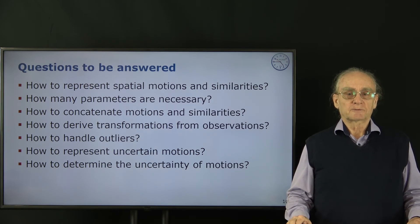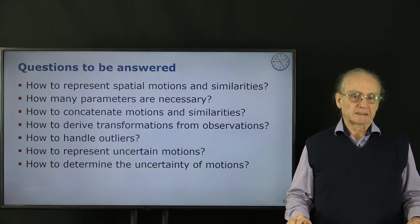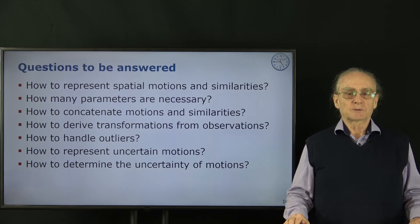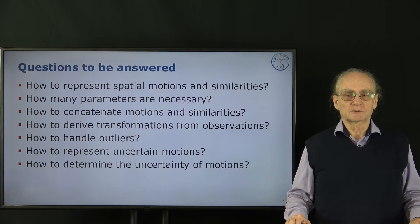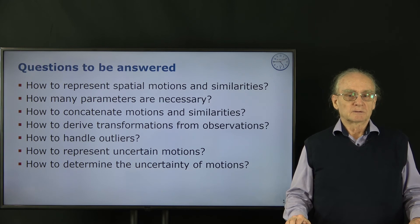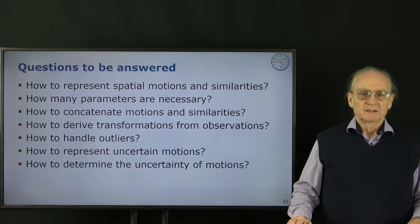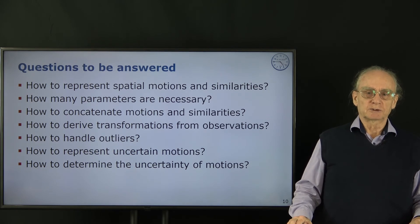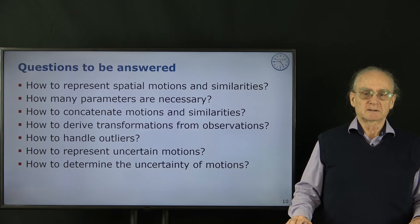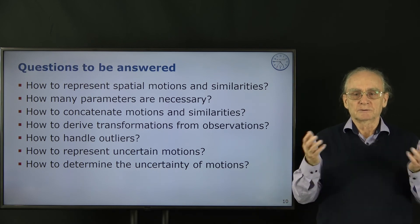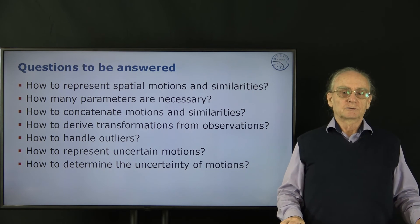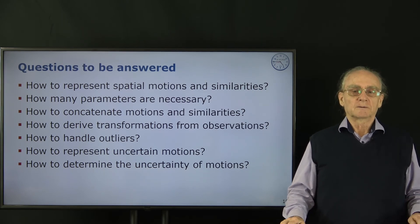Then we want to observe these transformations. We can't observe them directly, generally, but we use observations such as points or images. The question is how can we derive these transformations from these observed quantities? The observations will not be outlier-free, so how can we handle outliers? And finally, we have this problem of uncertainty in our observations, which we want to track to the final result, the uncertain motion or similarity. So we need to discuss how do we represent the uncertainty of a spatial motion. For the translation we may use standard deviations for the position. How do we do this with the rotations? We also have to discuss this.